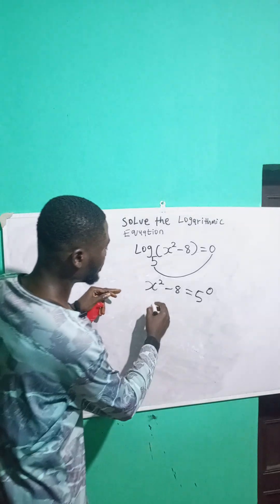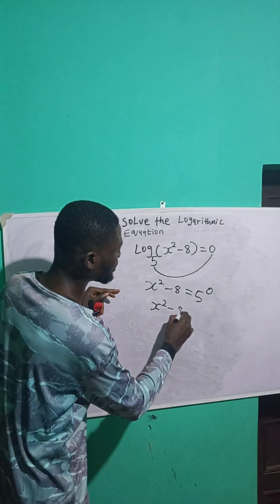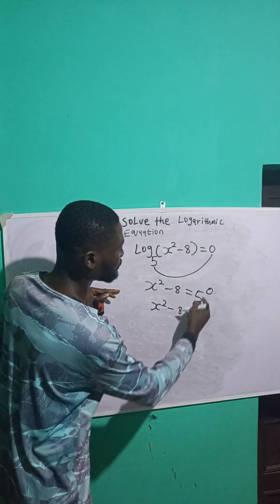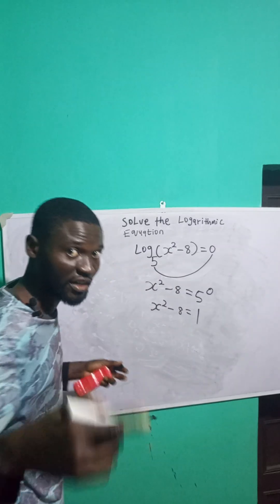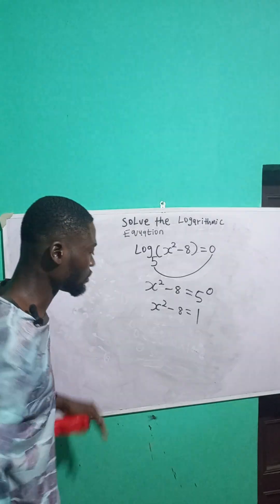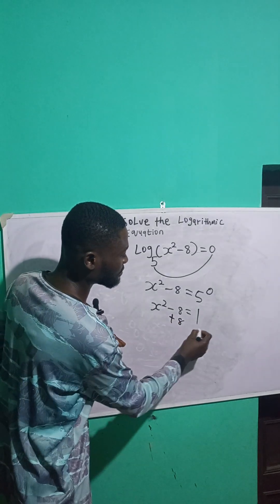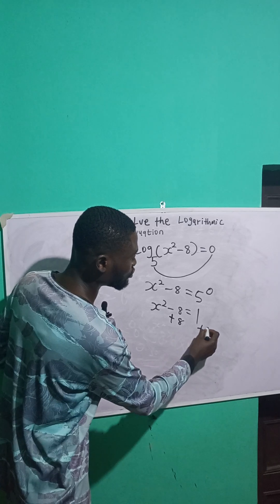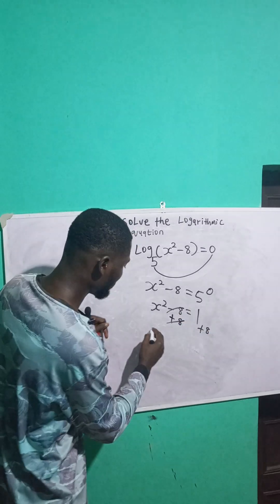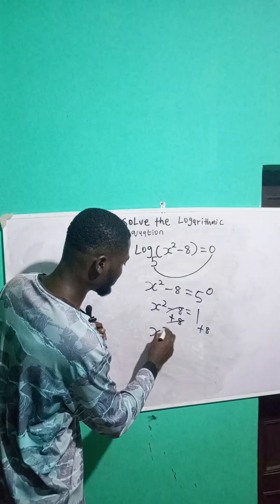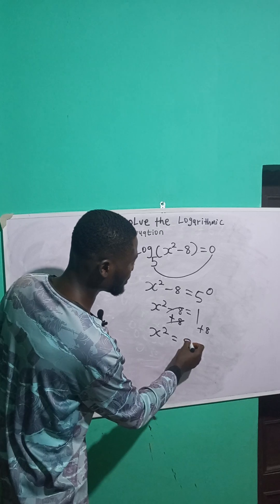So, x raised to the power of 2 minus 8 is equal to 5 raised to the power of 0, which is 1. Any number raised to the power of 0 is 1. To eliminate minus 8, I will take the inverse by adding 8 to both sides — minus 8 cancels with plus 8. So, I have x raised to the power of 2 is equal to 1 plus 8, which is 9.